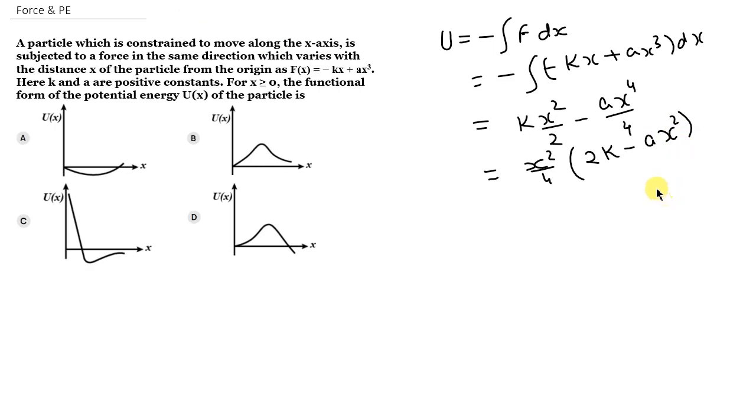So this function has two points where it's zero. If x equals zero, potential energy is zero. Second term is zero when x equals square root of 2k by a. So there would be two points.